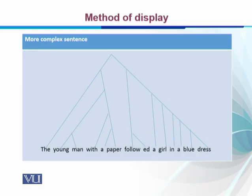Similarly, if we take a more complex sentence — 'the young man with a paper followed a girl in a blue dress' — we find this being displayed through the same tree diagram, done on the basis of binary division. Each constituent is divided accordingly, but this does not help us much in understanding the actual nature of the constituent.